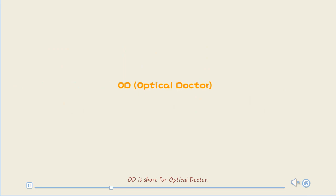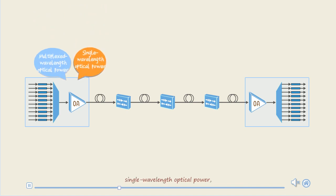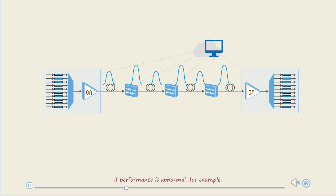OD is short for optical detector. The OD function can monitor multiplex wavelength optical power, single wavelength optical power, and fiber attenuation of each network node in real time. If performance is abnormal, for example, the attenuation of a line segment increases, the output optical power for the downstream will decrease.